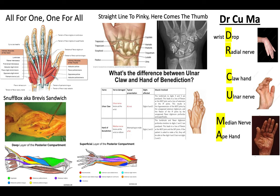For the thumb or thenar eminence, the 'all for one' muscles and the lumbricals for the first and second digit will be supplied by the recurrent branch of the median nerve. This one can be an exception because even though the Adductor Pollicis has 'Pollicis' in the name, it is supplied by the deep branch of the ulnar nerve.